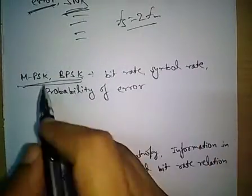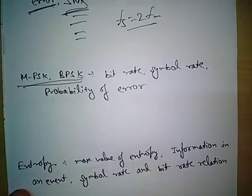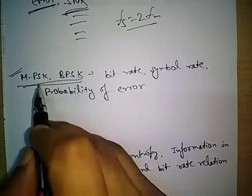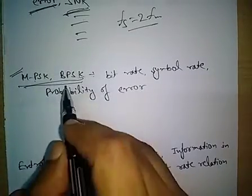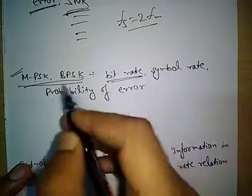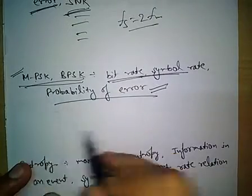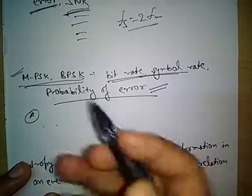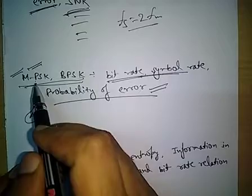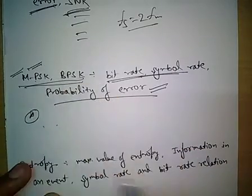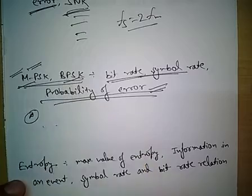The next topic is MPSK and BPSK. There are other digital modulation techniques like ASK and FSK, but those are not important for the GATE exam. The important ones are PSK — phase shift keying — and related MPSK or binary phase shift keying (BPSK). What is being asked includes the bit rate or symbol rate relation for a given MPSK scheme, and probability of error — which is very important. Questions may ask which MPSK scheme matches a given bit error rate.